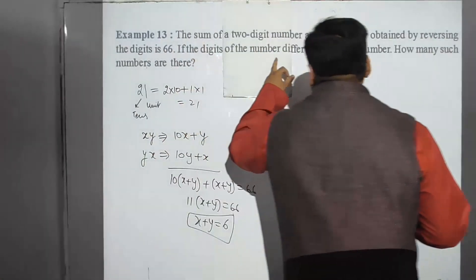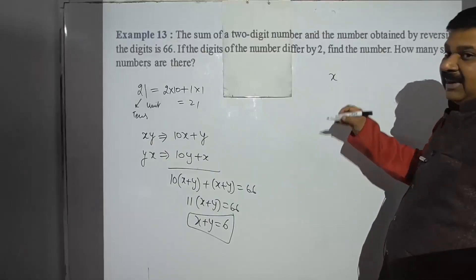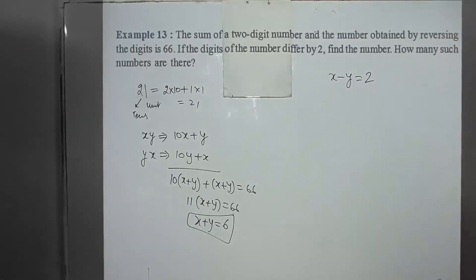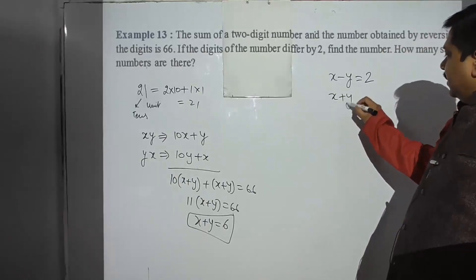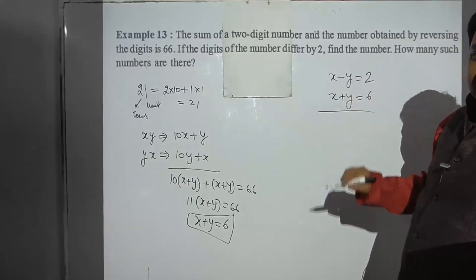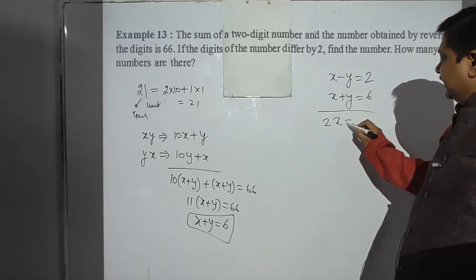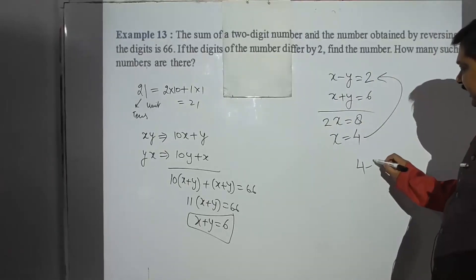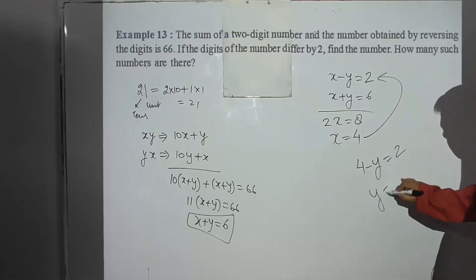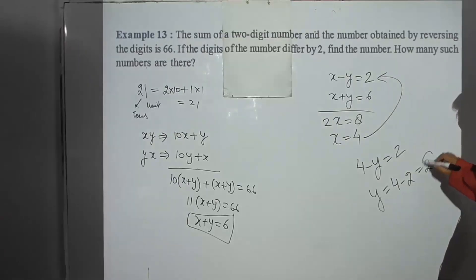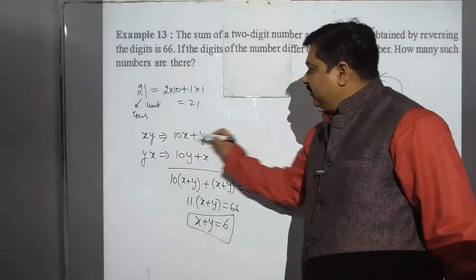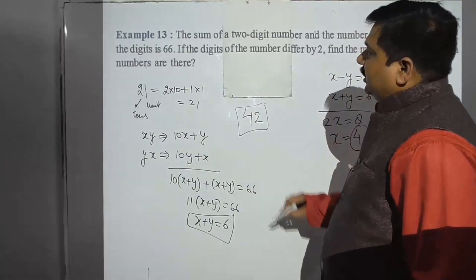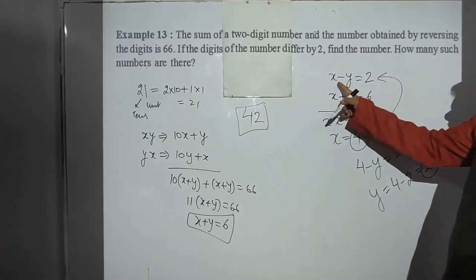The second condition says the digits differ by 2. Assuming x is greater, x minus y equals 2. Now we have x plus y equals 6 and x minus y equals 2. Adding both equations, y cancels and we get 2x equals 8, so x equals 4. Substituting back, 4 minus y equals 2, so y equals 2. Therefore x is 4 and y is 2, giving the number 42.